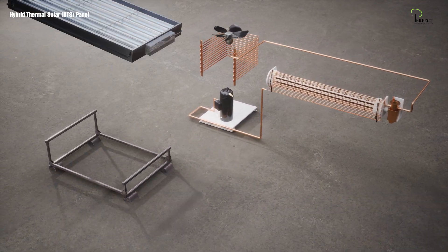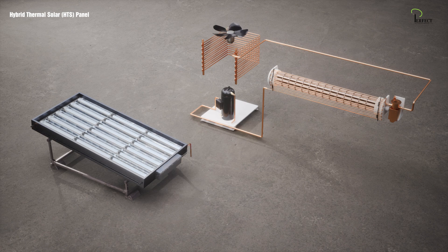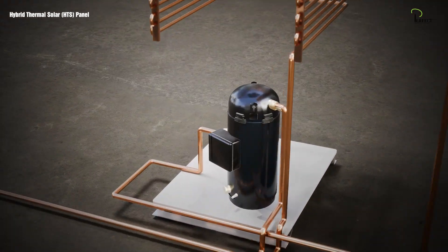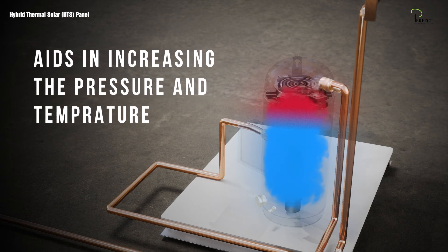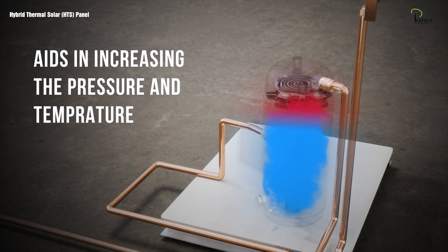In an air conditioner powered by an HTS panel, the HTS panel is connected between the compressor and the condenser. Here it aids the compressor in its job of increasing the pressure and temperature of the refrigerant gas.